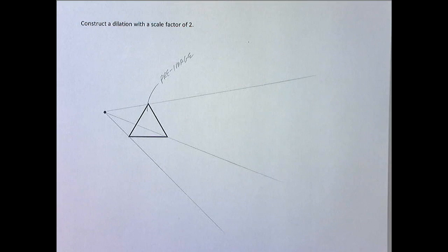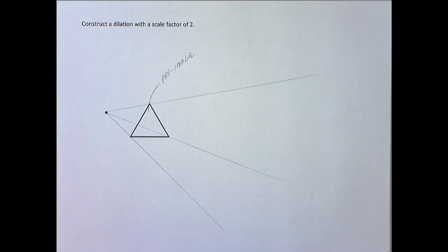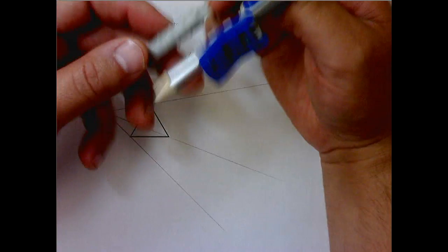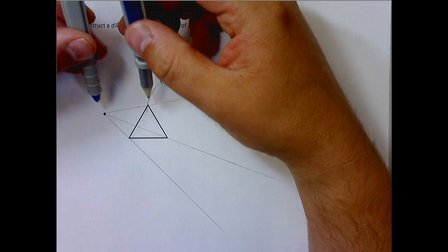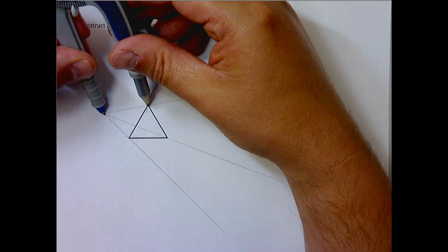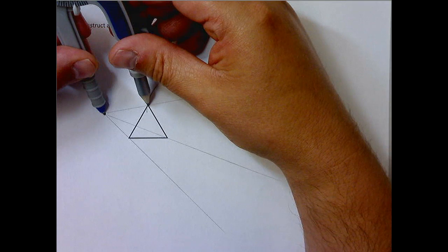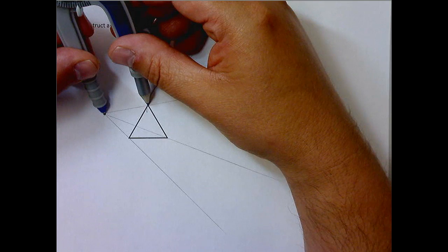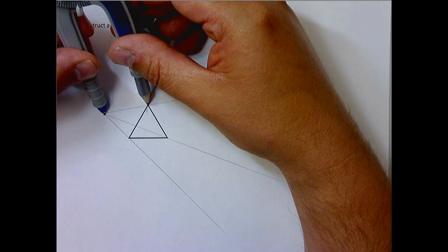Okay, so get your compass. And we're going to do this same step three times. What you need to do is you need to set your compass point on your center of dilation and collapse it or expand it until you have the pencil on one of the vertices. It does not matter which order you do this.